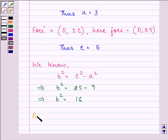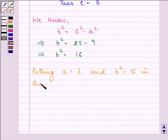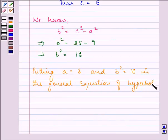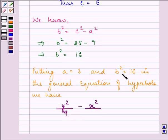Putting the values a = 3 and b² = 16 in the general equation of the hyperbola, we have y²/a² - x²/b² = y²/9 - x²/16 = 1.